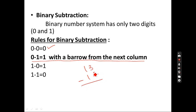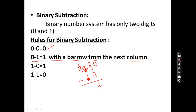For example, consider 73 minus 17. When we try 3 minus 7, we can't subtract because 3 is smaller than 7. So we borrow 1 from the next digit — that digit becomes 6, and 3 becomes 13. Then 13 minus 7 is 6. The digit that gave the borrow reduces by 1: 7 minus 1 is 6. Then 1 minus 1 = 0, and 1 minus 0 = 1. So the rules are: 1 − 0 = 1 and 1 − 1 = 0.